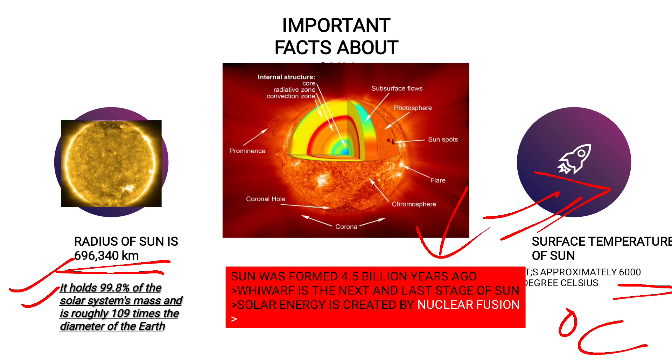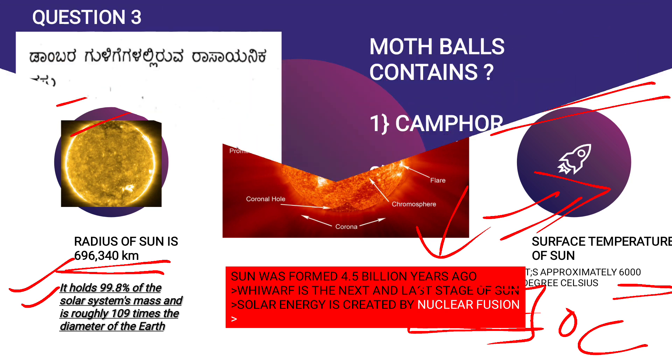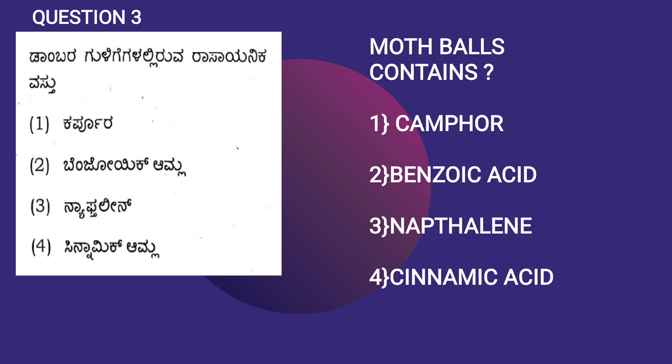And white dwarf. Do remember this word white dwarf. White dwarf is the last and the next stage of the sun. Next, solar energy is generated by nuclear fusion. Do remember this: nuclear fusion. Solar energy is generated by nuclear fusion, F-U-S-I-O-N. Let's move on to question number three.